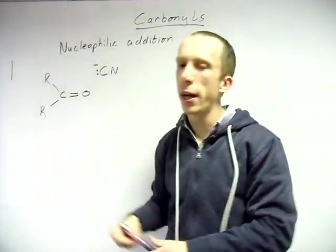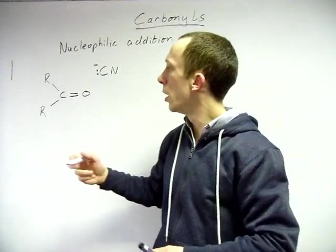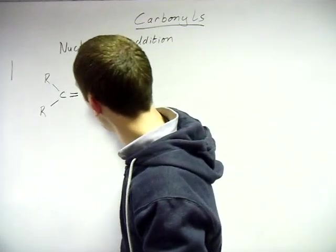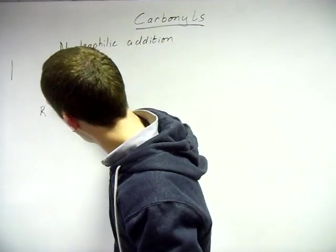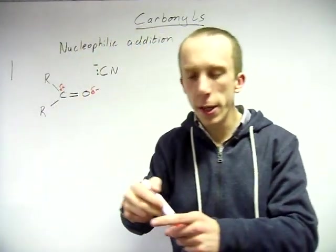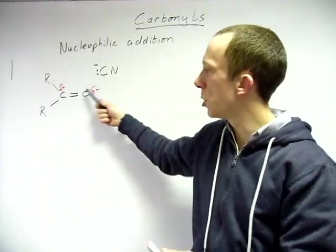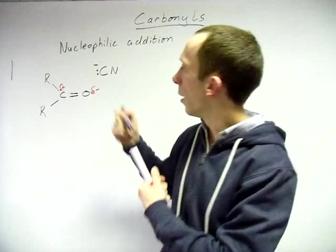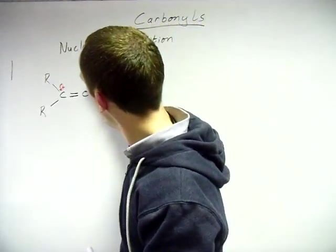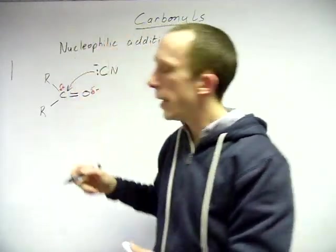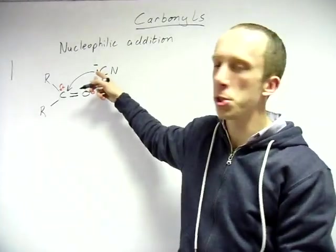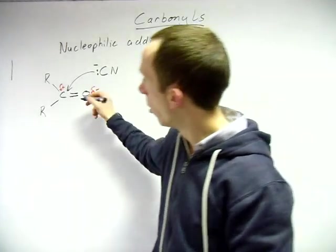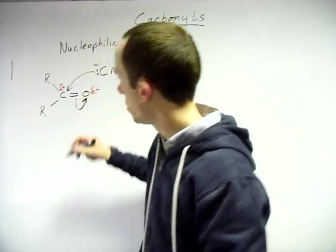Why is the nucleophile going to attack this carbonyl compound? Because of the electronegativity difference between oxygen and carbon — the carbon is electron deficient, as the oxygen pulls electrons away in that bond. The cyanide group can therefore attack that carbon. Start at your lone pair and point at the carbon. Carbon can only have four bonds, so that pi bond will break.